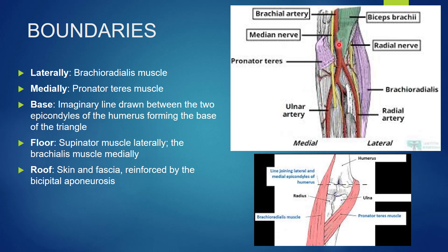The base is formed by an imaginary line drawn between the two epicondyles of the humerus, forming the base of the triangle or base of the cubital fossa. So the base will be formed by an imaginary line joining the medial epicondyle and the lateral epicondyle of the humerus.